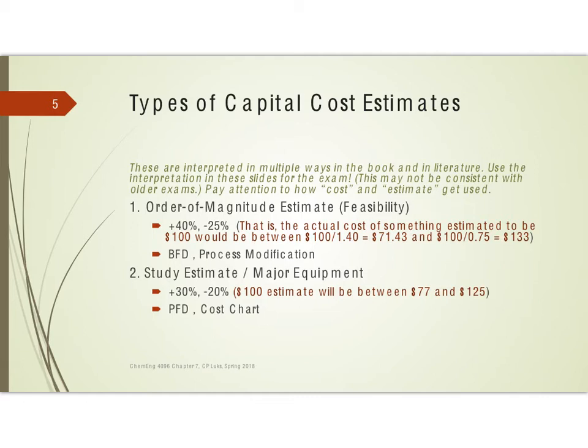At this stage you should have a process flow diagram available, and you should start building a cost chart. You expect your estimate will be a little better — over maybe 30%, under maybe 20%.